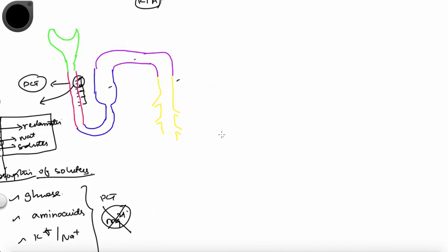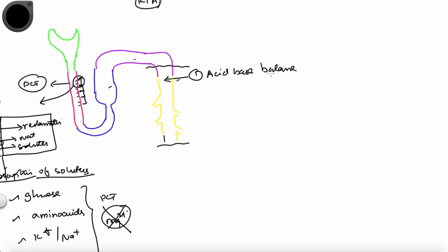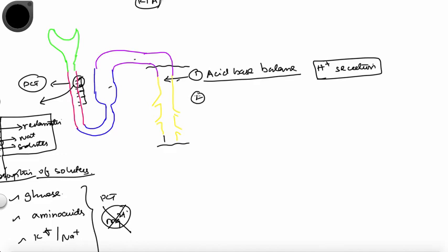Moving on to the distal part of the nephron, which includes the distal portion of the DCT and the collecting ducts. The most important function of the distal nephron is acid-base handling. It is the most important site for acid-base balance in the kidney by virtue of hydrogen ion secretion — H+ secretion. This is critically important.